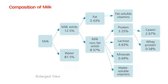Here we see the specific proportion by percentage of different constituents in cow milk. Milk will have around 12.5 percent solids and 87.5 percent water. Fat is 3.43 percent, which also contains fat soluble vitamins. Milk solids not fat, or SNF, is around 8.57 percent. Of this, protein is 3.25 percent, containing casein at 2.67 percent and whey protein around 0.58 percent. Lactose is 4.63 percent, minerals 0.69 percent, and there are other water-soluble vitamins.